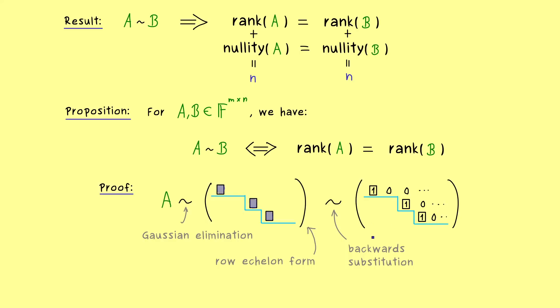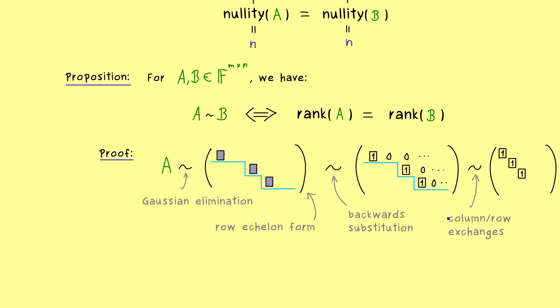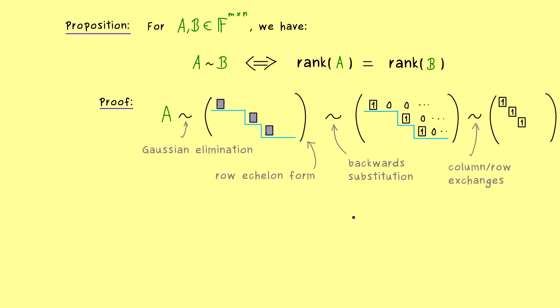Hence we just have row and column operations, which can also be expressed as multiplying with invertible matrices. Therefore the important part here is that we still get out an equivalent matrix. And then you see, in the last step we can also do a column exchange, which is also given by multiplying with an invertible matrix. More precisely, this is given by a permutation matrix, which is always invertible.